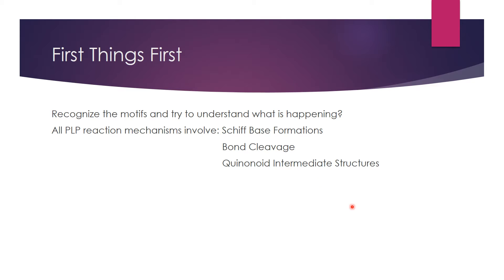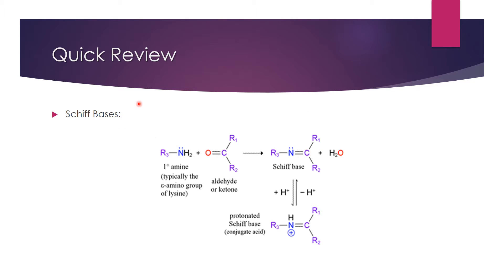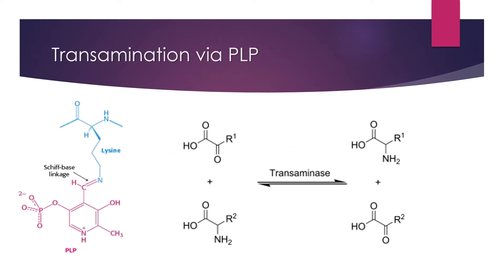I'll go into detail on Schiff base formations as we go through the mechanisms. For a quick review from organic chemistry: Schiff bases are also known as imines, and they form typically when you have an aldehyde or a ketone reacting with a primary amino group. In the case of PLP it's going to be an epsilon amino group. They form a planar Schiff base which is highly reactive, and it can also be protonated to form a conjugate acid.